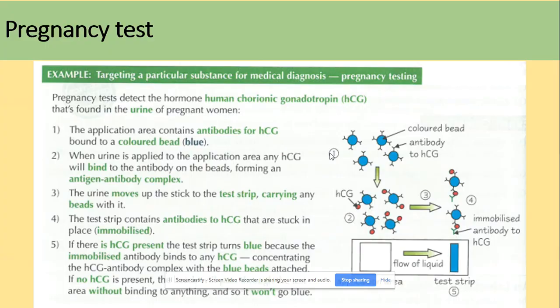Now we need to look at the pregnancy test and the ELISA test. The pregnancy test detects the hormone HCG, which is found in the urine of pregnant women. The test has two windows: the first shows that the test is actually working, and the second shows whether the test is positive or negative. If the second window changes color, that tells you that the antibodies for this hormone have been detected.